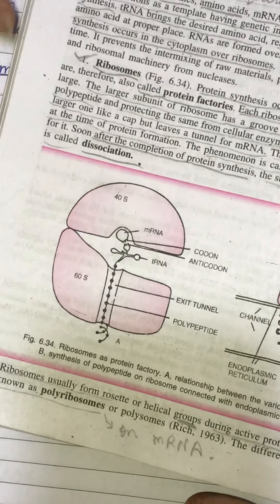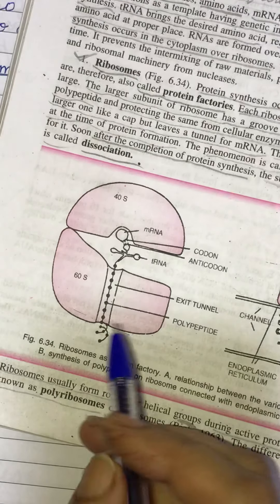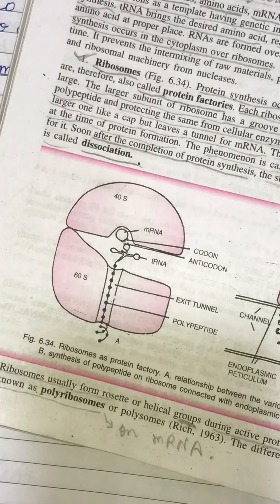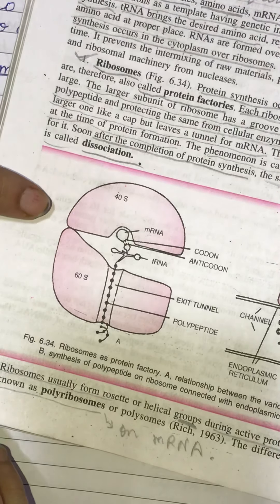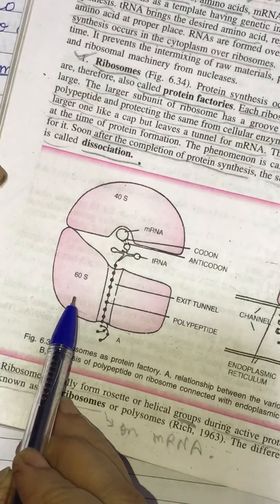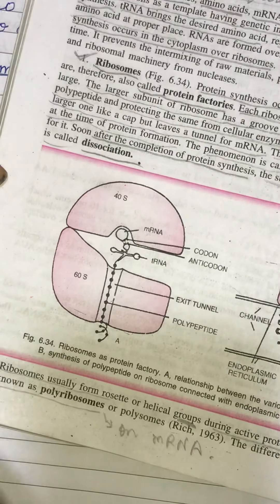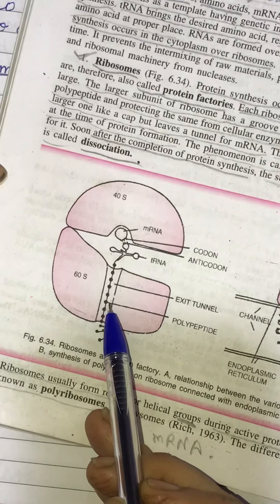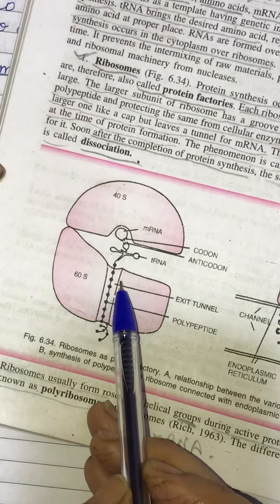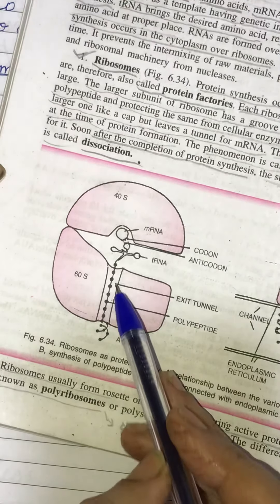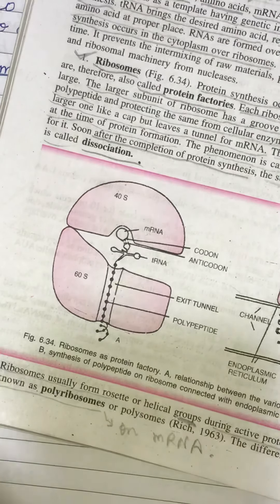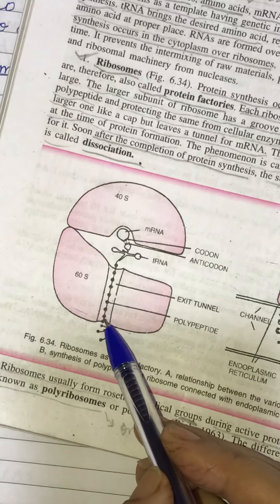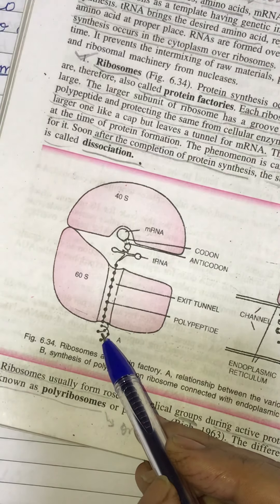Now ribosomes, children, each ribosome has two unequal parts, small and large. In the diagram, it is very clear that this is the larger part and this is the smaller. The larger subunit of ribosome has a groove for pushing out the newly formed polypeptide. Whenever protein synthesis takes place, the polypeptide is formed from the amino acids and this polypeptide is pushed through this groove.